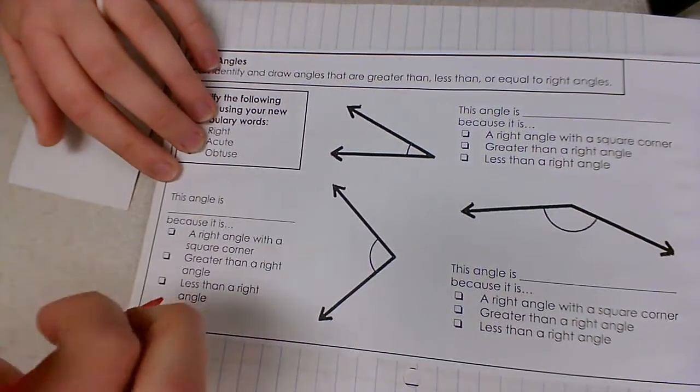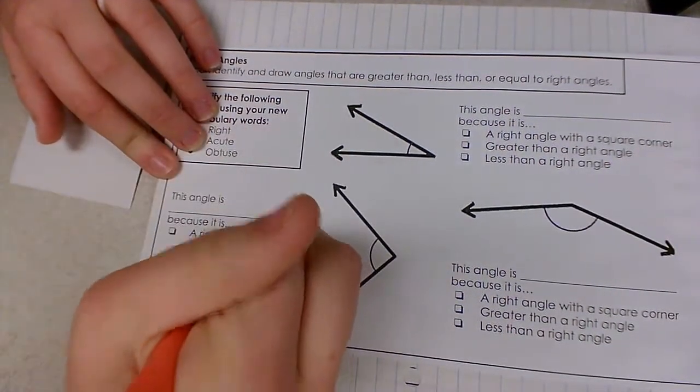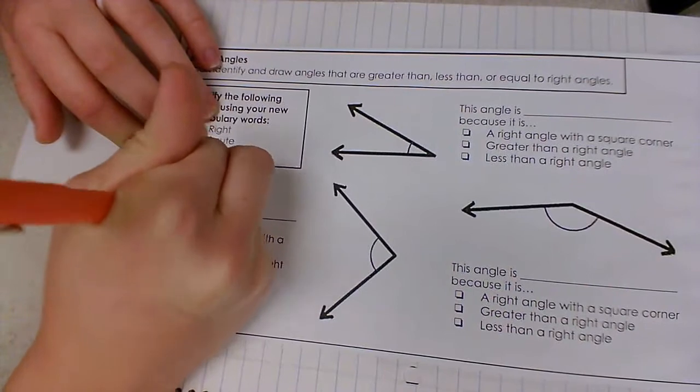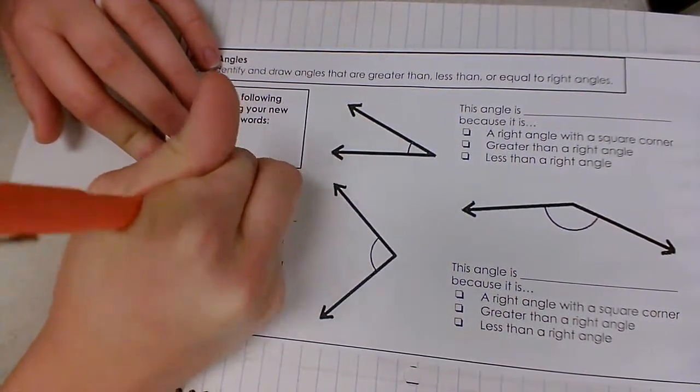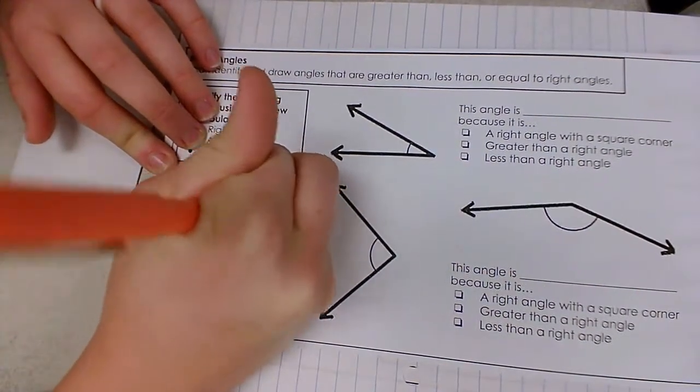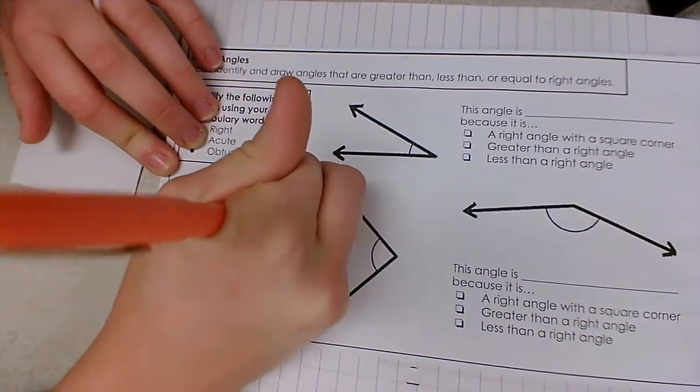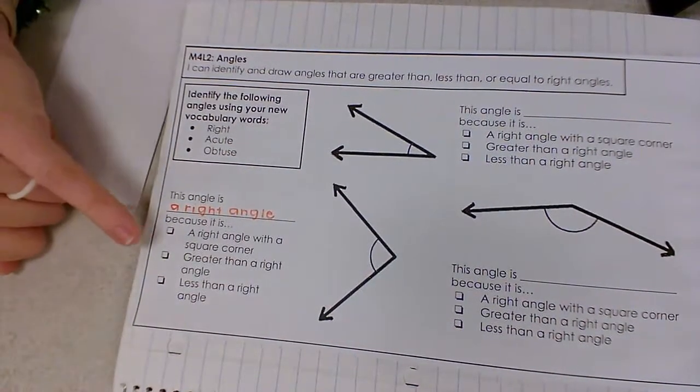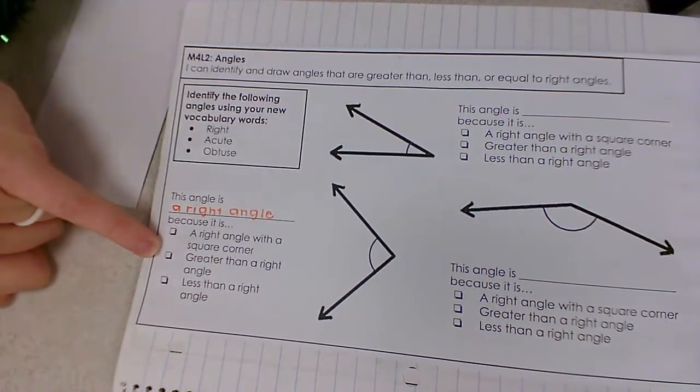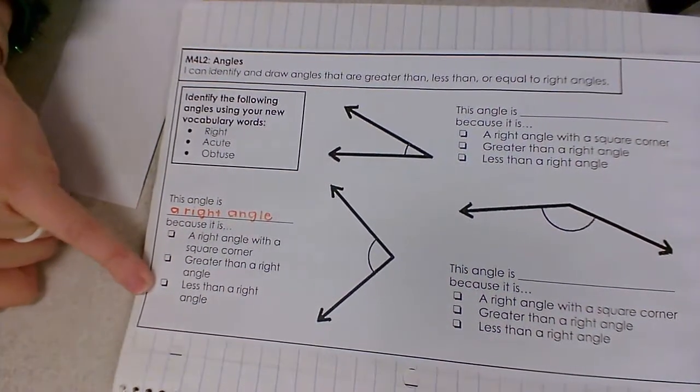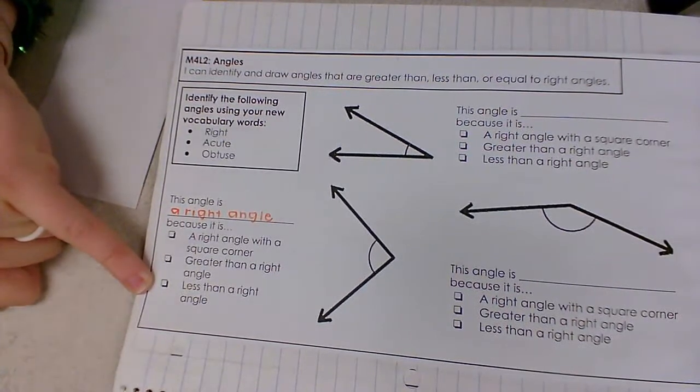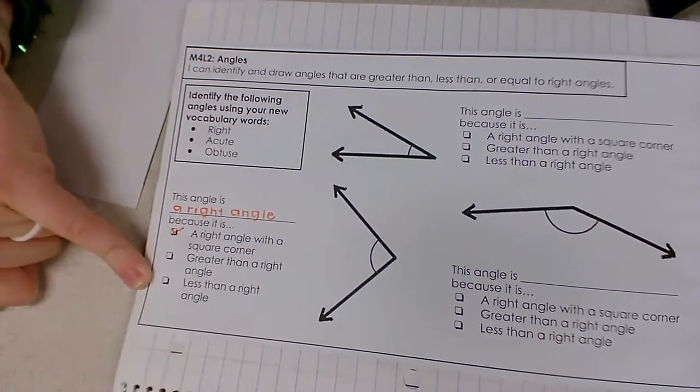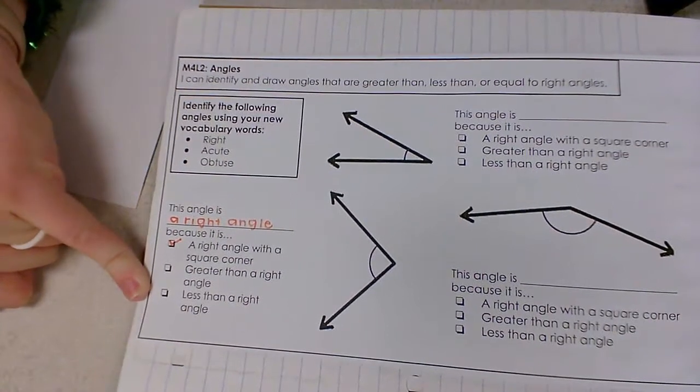This angle is a right angle because it is a right angle with a square corner, greater than a right angle, or less than a right angle. Since we found the exact right angle, we're going to label it and check mark saying we found our square corner.